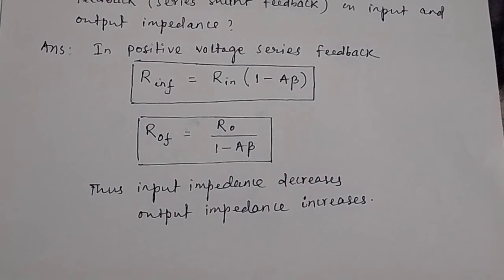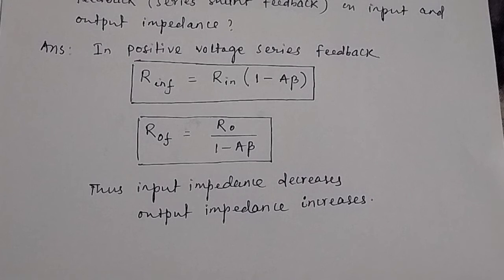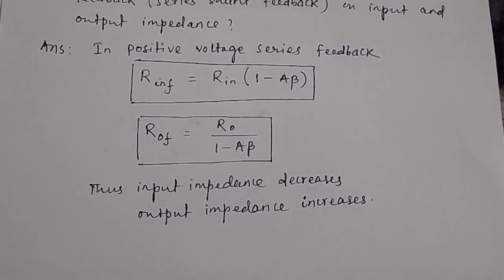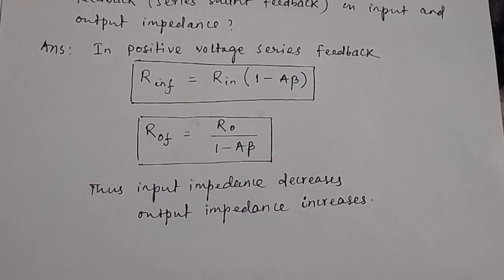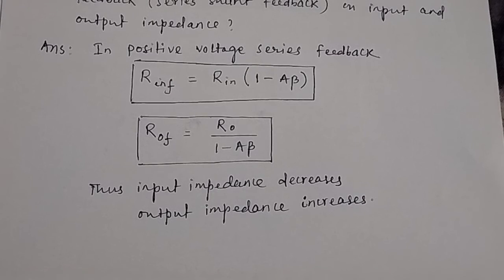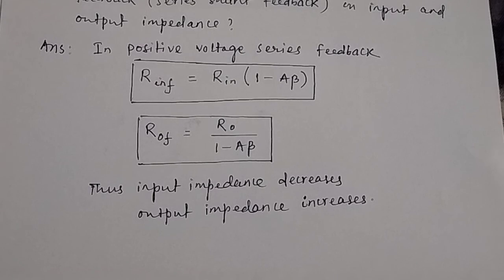In summary, you should remember that feedback circuits usually consist of resistors and there are four types of feedback circuits — both negative and positive. You should remember how input and output impedance vary in feedback circuits, especially the voltage series feedback circuit, which is most commonly asked in examinations. Thank you.